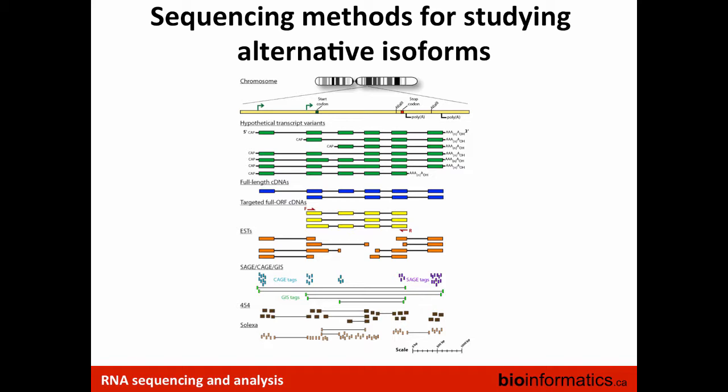About 10 years ago, more high-throughput methods for studying alternative expression came out, including CAGE, SAGE, and GIS — using different combinations of sequencing the ends of transcripts by sequencing little tags derived from the 5' or 3' end, or both ends of transcripts. Then next-generation sequencing started, revolutionizing the field of exploring transcript diversity, starting with 454 and Solexa, where we could suddenly shotgun-sequence a transcriptome with millions of short reads at relatively low cost. This has increased in recent years, where we now get large numbers of reads in the 100-200 base range at a relatively cheap cost.